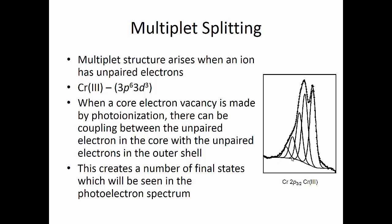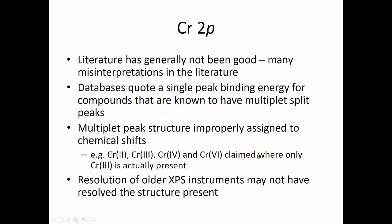So instead of a nice single peak for chromium 3+, we get this multiple split structure that can be fit with five peaks. In general, the literature for chromium 2p has not been very good. There have been many misinterpretations, including in some of the common databases which quote a single peak binding energy for compounds that are known to have multiple split peaks.